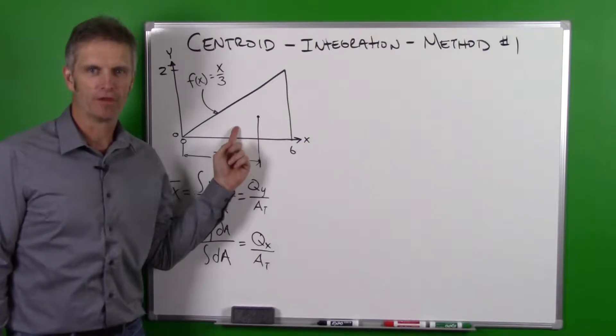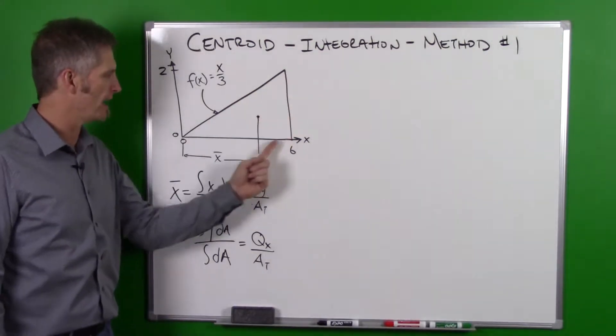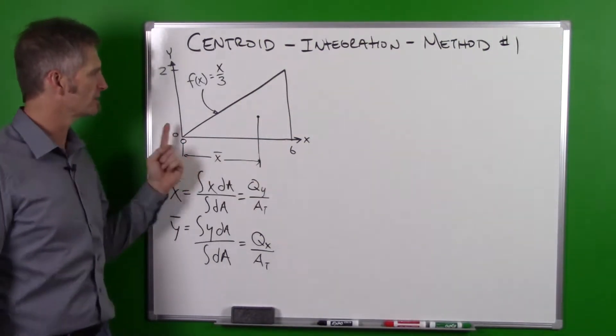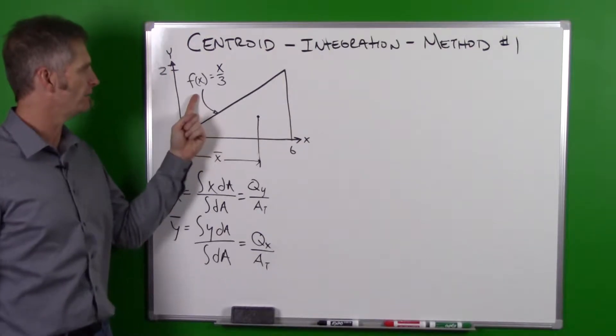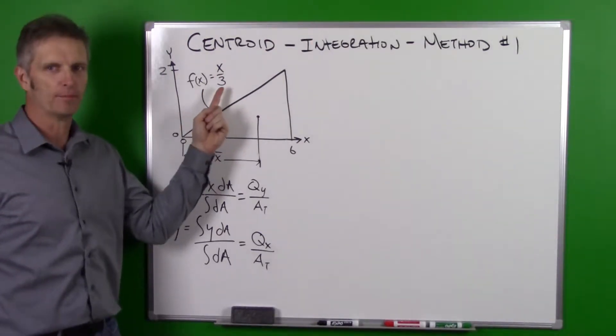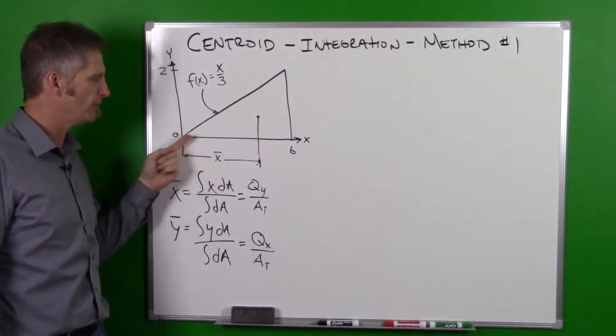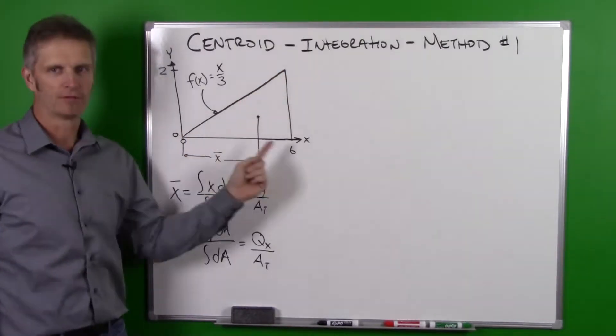In this case we're going to have a planar area. This is going to be a triangle that has a base of 6, a height of 2, and it's defined by a function x divided by 3.